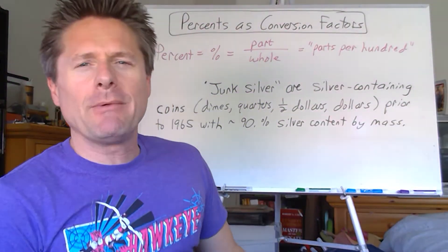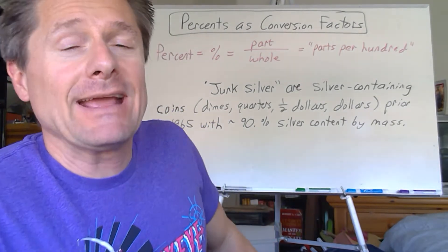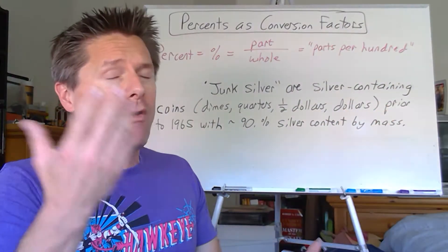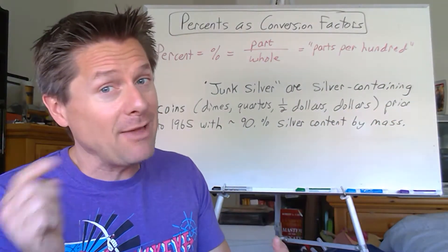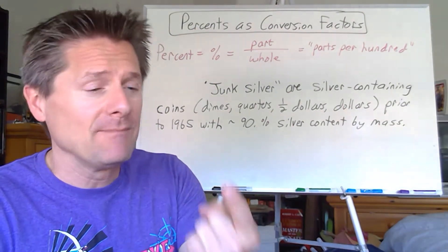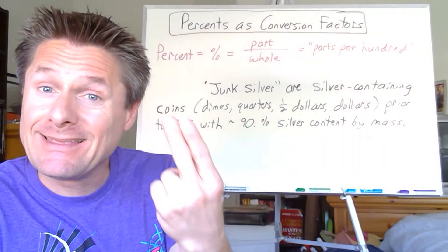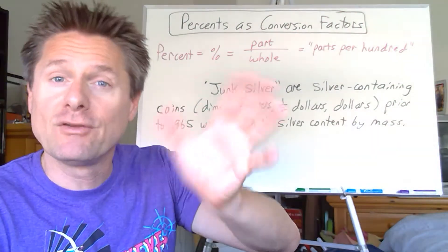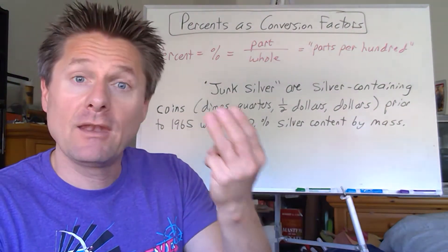Hey there, team. Chemistry coach coming at you. We are on our journey in chemical mathematics — how do we do math in chemistry when we have all these units and all this uncertainty to track? It's not just writing numbers down and popping them in your calculator. Every answer in chemistry is about the numerical value, tracking the uncertainty, looking at your significant figure rules — subtracting or adding, dividing, multiplying, taking averages, logarithms — and then tracking units. The units have to work out.